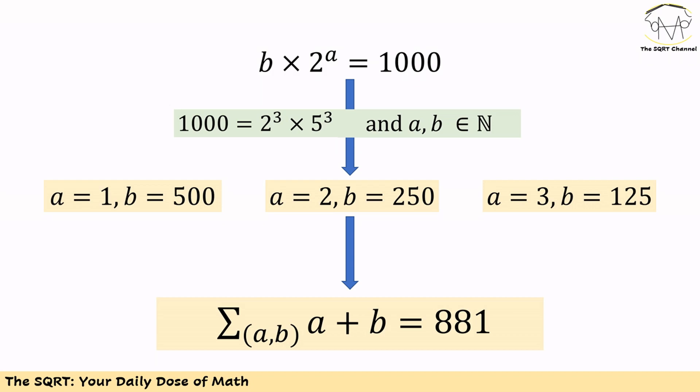Remember, a cannot be 0 since a and b are positive integer numbers. So at the end, we have three possible cases. And for each case, we calculate a plus b. Then we calculate the sum of a plus b for all possible values, and the result is 881. And that's our answer.